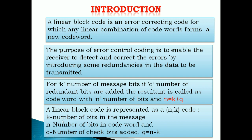A linear block code is represented as an n comma k code, where k is the number of bits in the message, n is the number of bits in the code word, and q is the number of check bits added. The value of q is equal to n minus k.